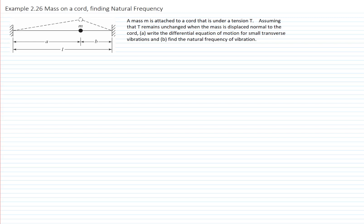In this example, we have a mass on a cord. This is example number 2.26 from our textbook, RAU. A mass is attached to a cord that is under tension T. We will assume that the tension remains unchanged when the mass is displaced normal to the cord. This is because the displacements are very small. We will write the differential equation of motion for a small transverse vibration and find the natural frequency of the vibration.